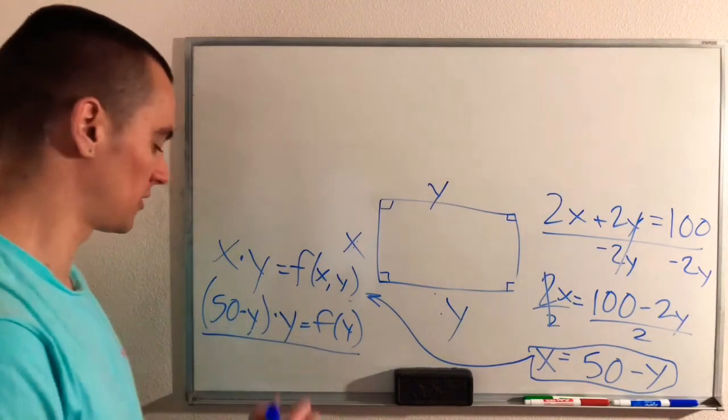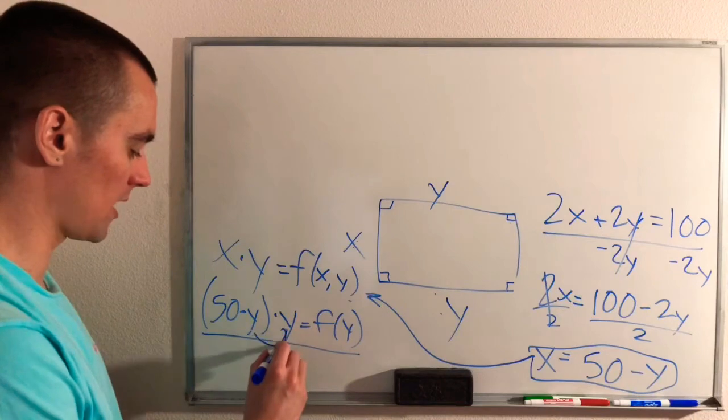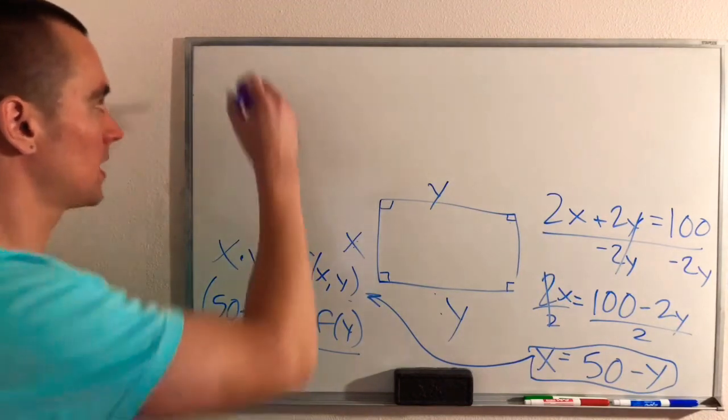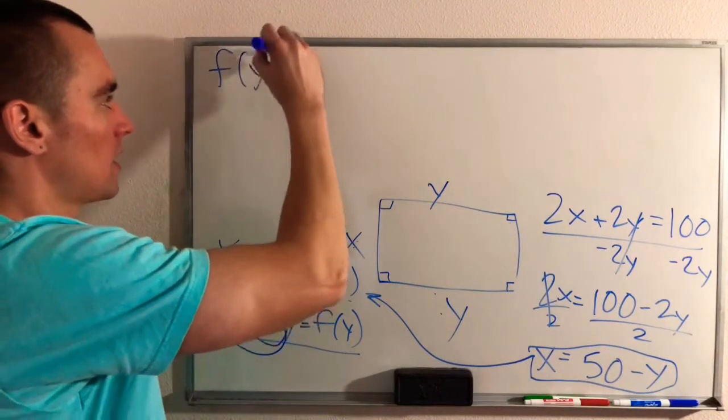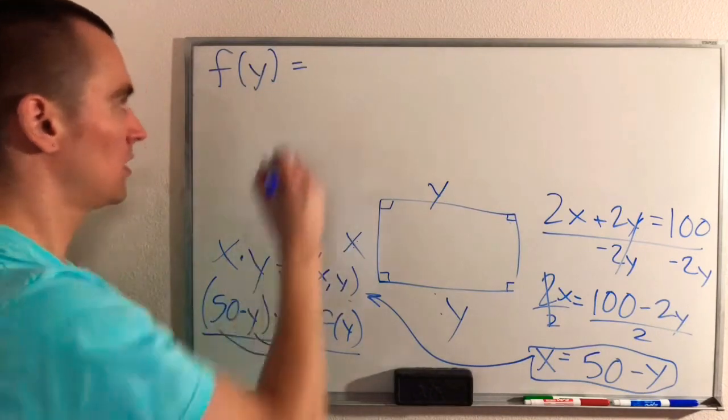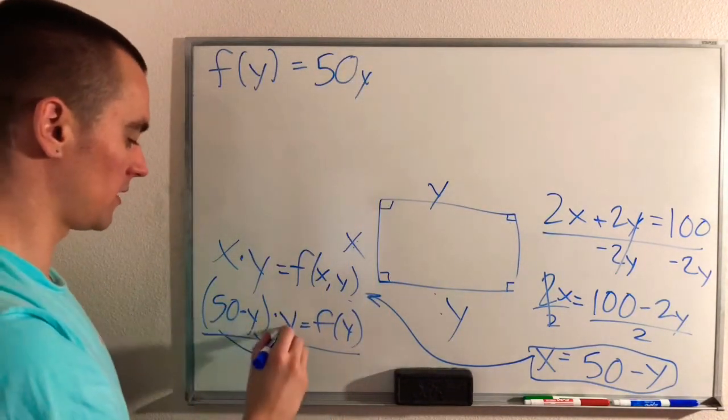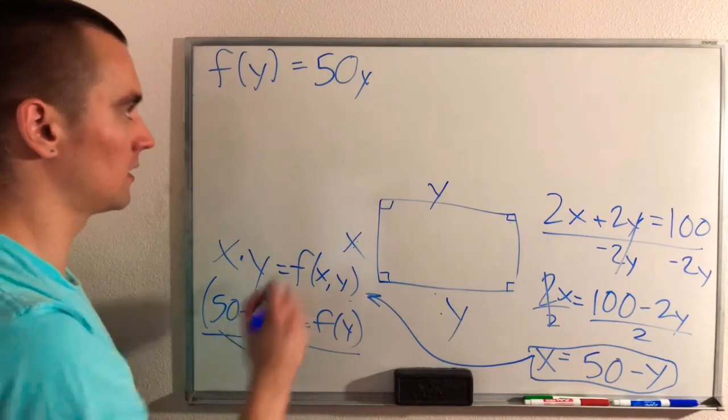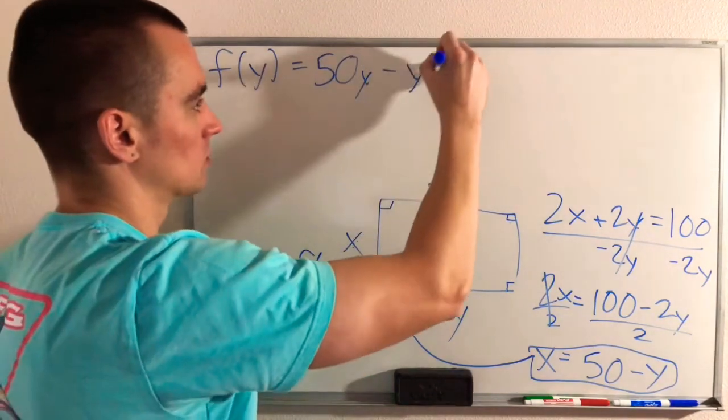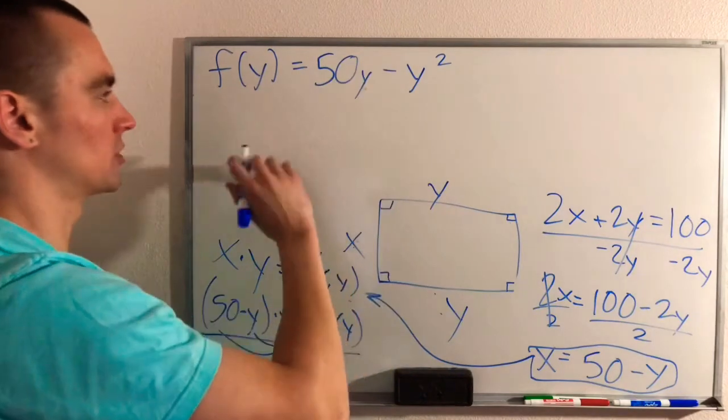So if we take the derivative of this function, what I would actually recommend doing first is distributing this Y into your parentheses. So doing that will give us F of Y equals 50Y. If we multiply Y by 50 and then if we multiply Y by negative Y, we'll get negative Y squared. So this is our function.